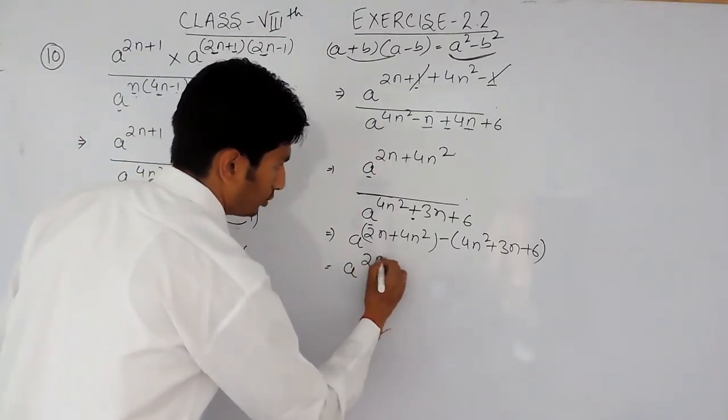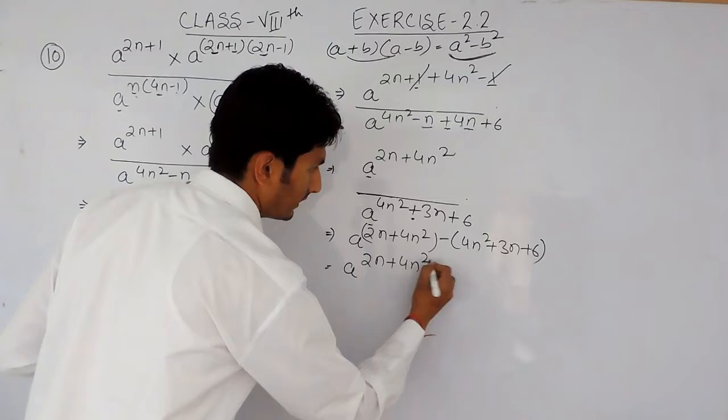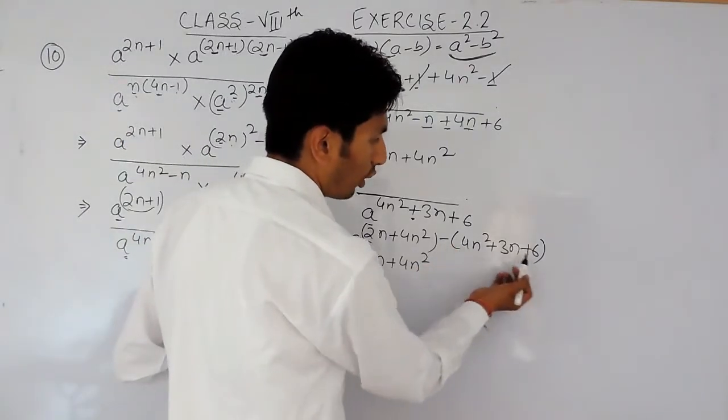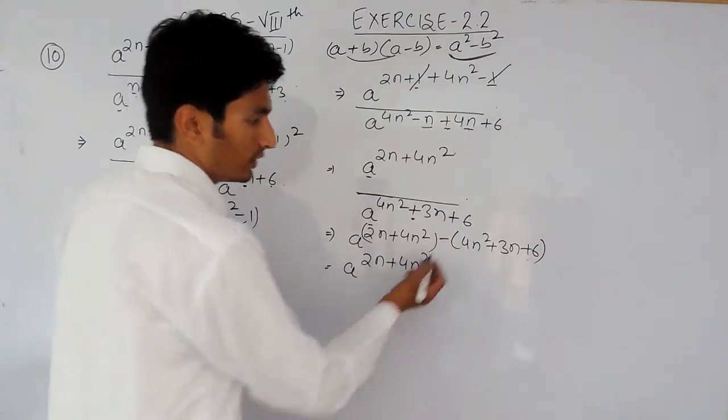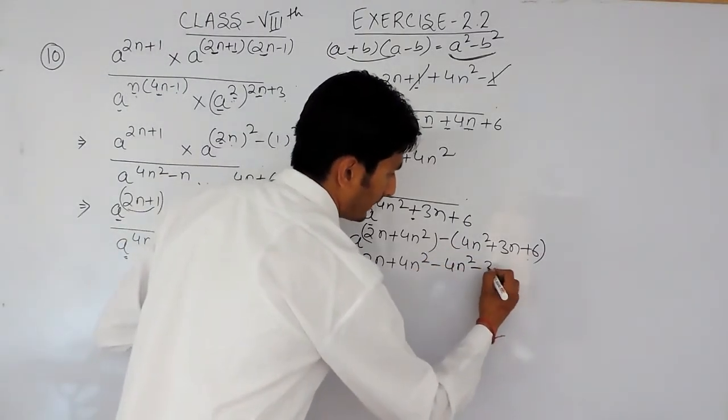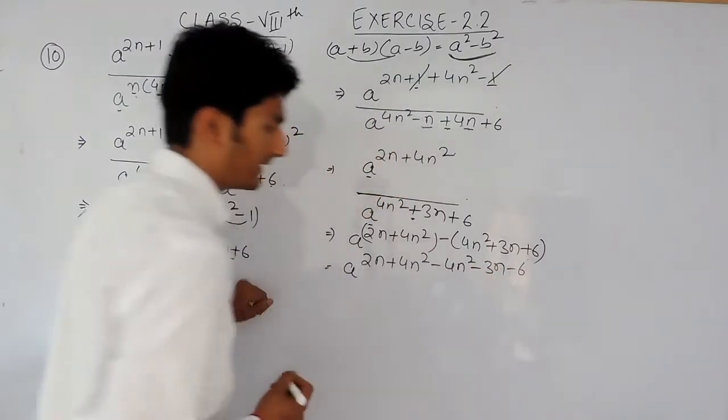So this will be a, 2n plus 4n square. There is a negative sign outside the bracket, so it should change all the signs inside the bracket. Plus will become minus 4n square, this will become minus 3n, and this will become minus 6.